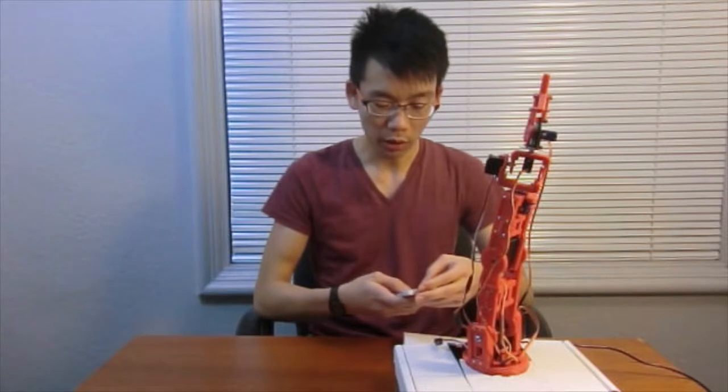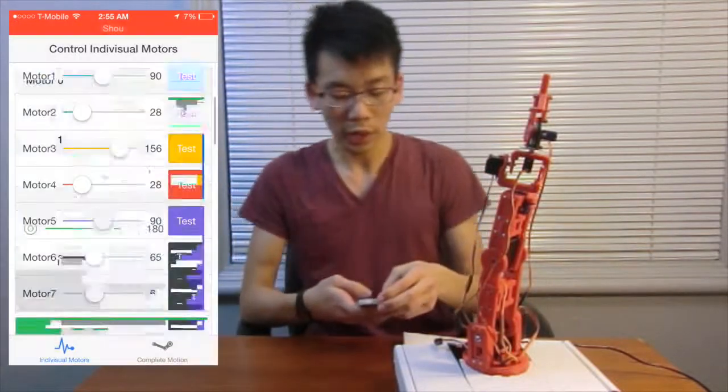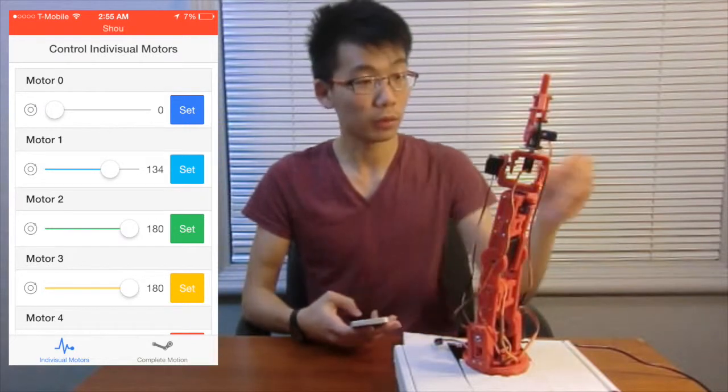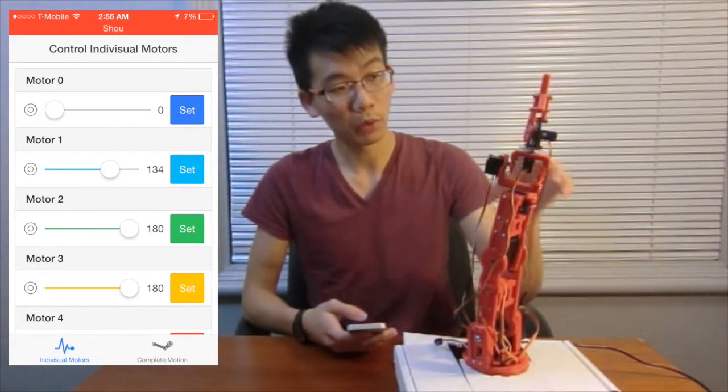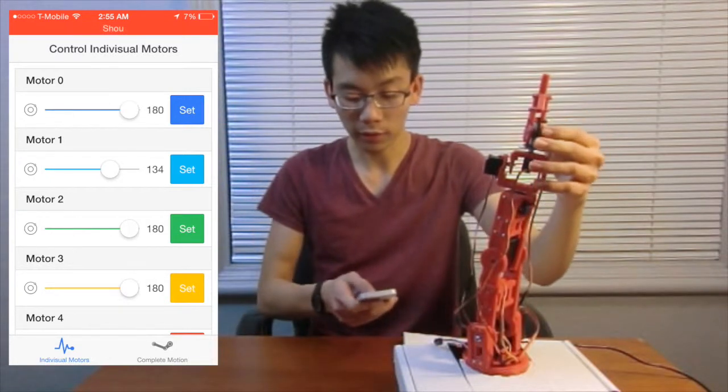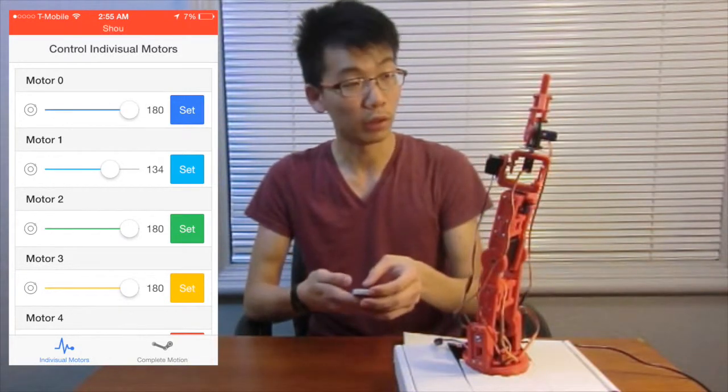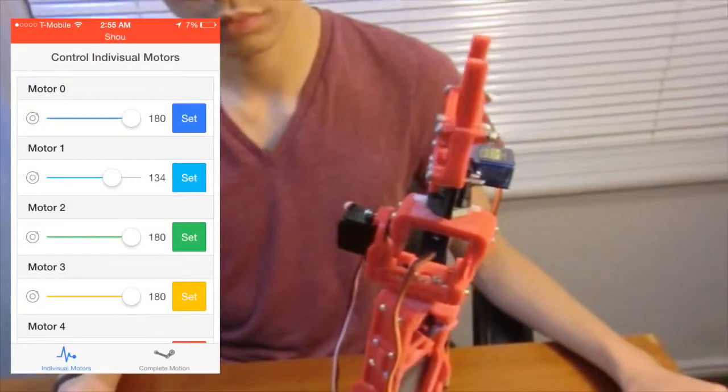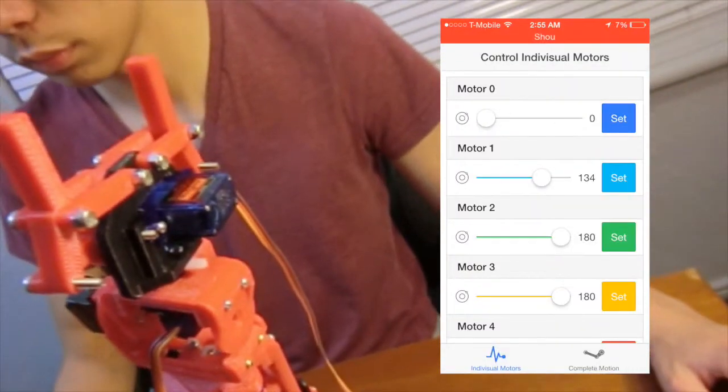And let me show you a quick demo. So in this app, we have two modes. The first one is individual motor control. For example, motor zero is the top one that controls the hand. I can set the signal to 100 degrees, and it will open. And I can set back to zero, and it will close.